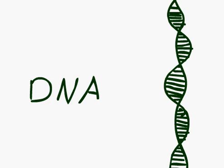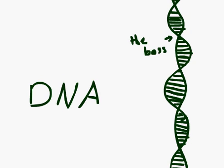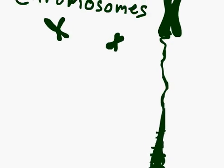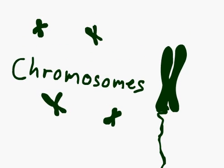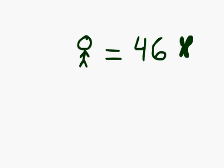DNA really just tells life how to build itself. During cell division, DNA is wound up in little chunks called chromosomes. Every organism has a set number of chromosomes — all humans have 46, and all pineapples have 50.